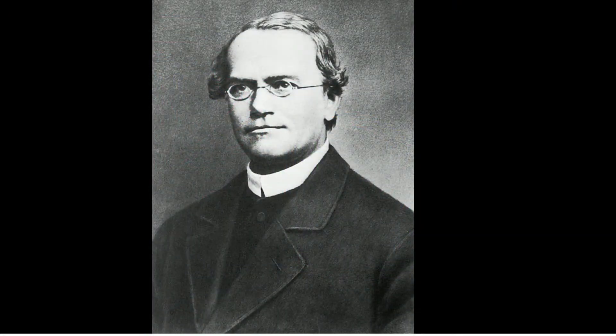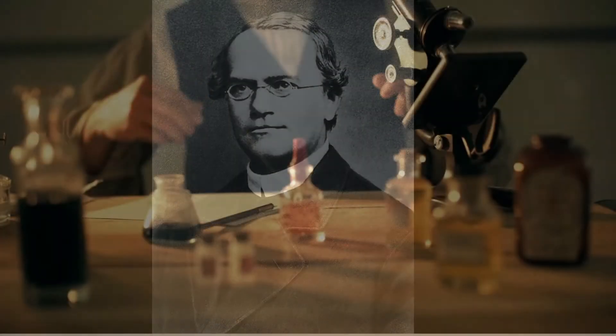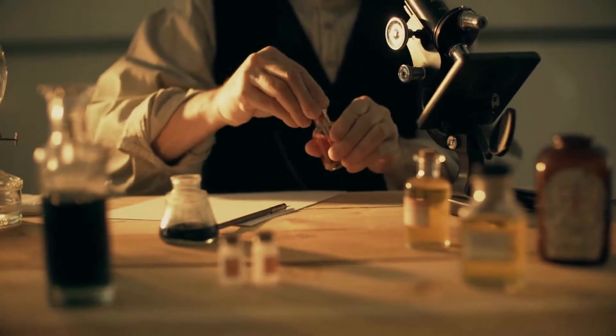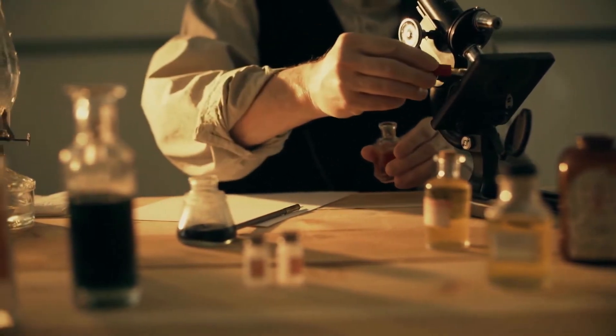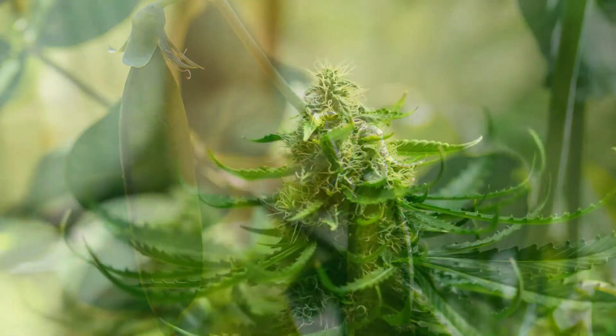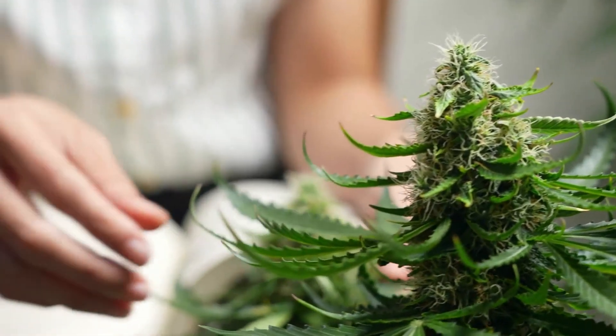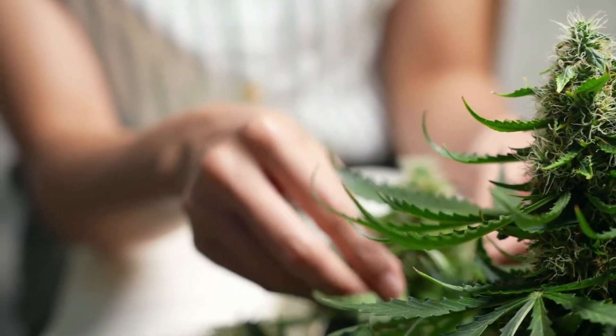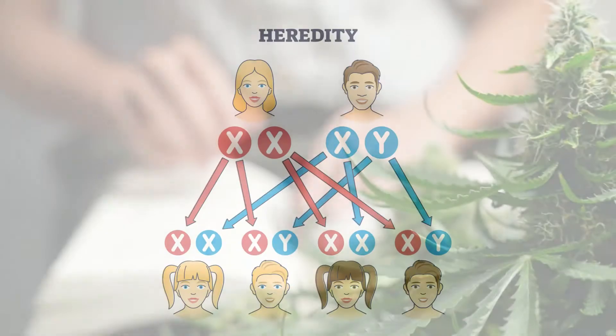Gregor Mendel is considered the father of genetics. He was a monk who enjoyed experimenting with science at the monastery, probably more than being a priest. His most famous experiments involved pea plants. Mendel's pea plant experiments, conducted between 1956 and 1963, established many of the rules of heredity.